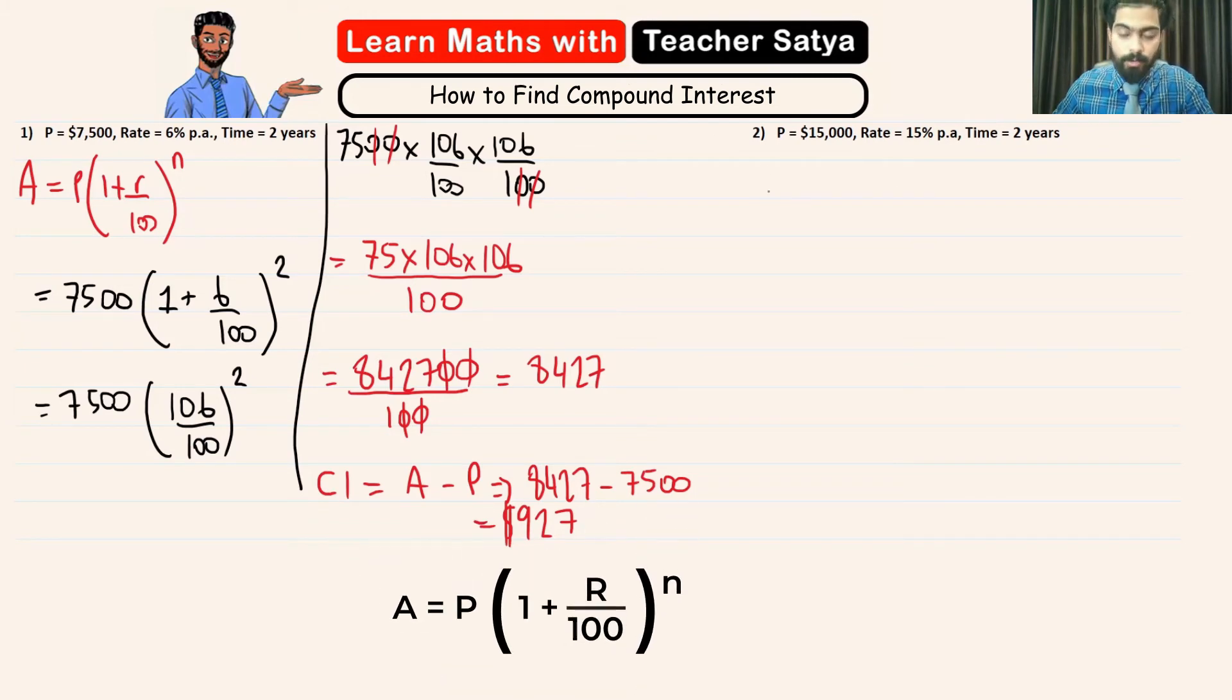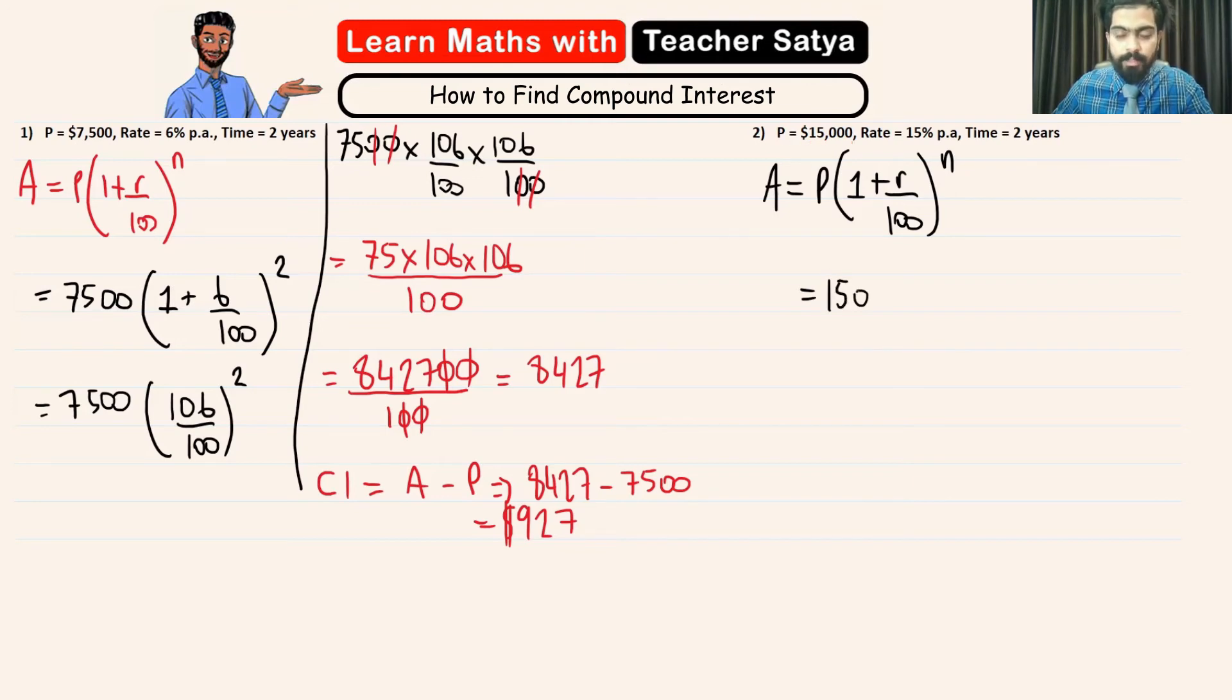We are always going to start by writing the formula down. So, the amount is P times 1 plus R over 100 to the power of N. N is the amount of years. Now, let's see what we have here. We have the P as 15,000 multiplied with 1 plus 15 over 100 to the power of N, which is 2 years. We are going to do exactly the same like the previous question.